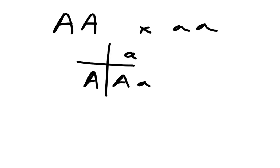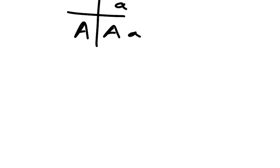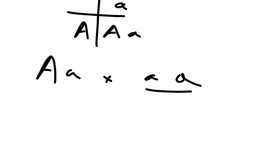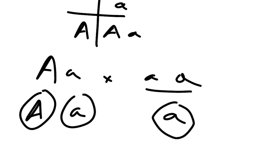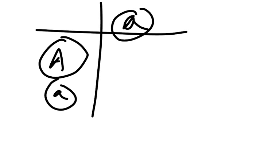Mendel's first law states that of a pair of alleles, only one of that pair goes into the gametes. So if you have this heterozygote and cross it with that, this is going to produce one gamete type and this is going to produce the other gamete type in an equal ratio — half and half. Half will have the big A and half will have the little a. So half the offspring are going to be the recessive phenotype and half are going to show the dominant phenotype.